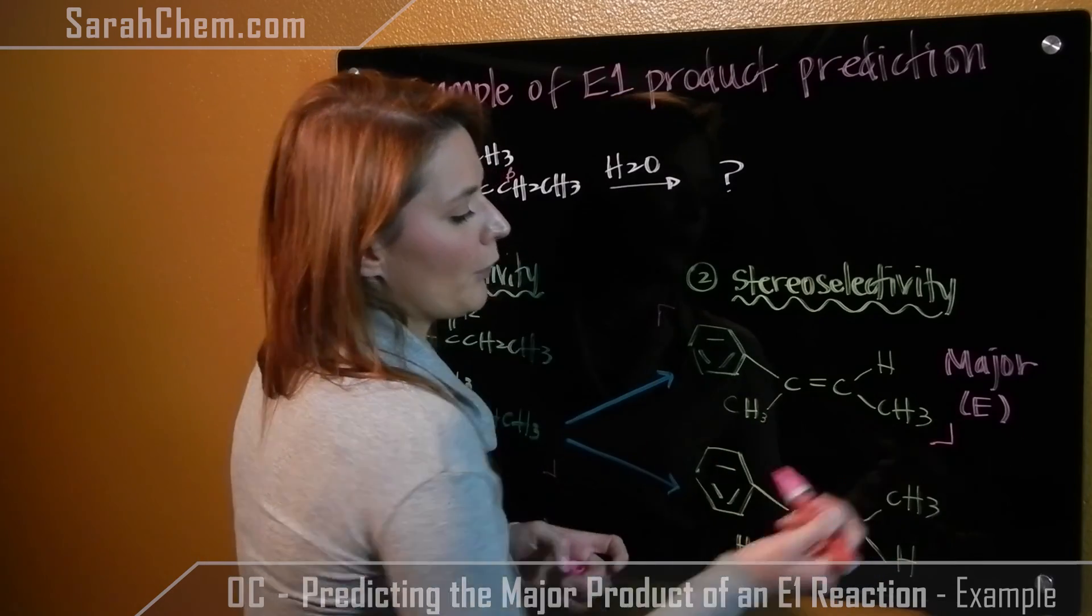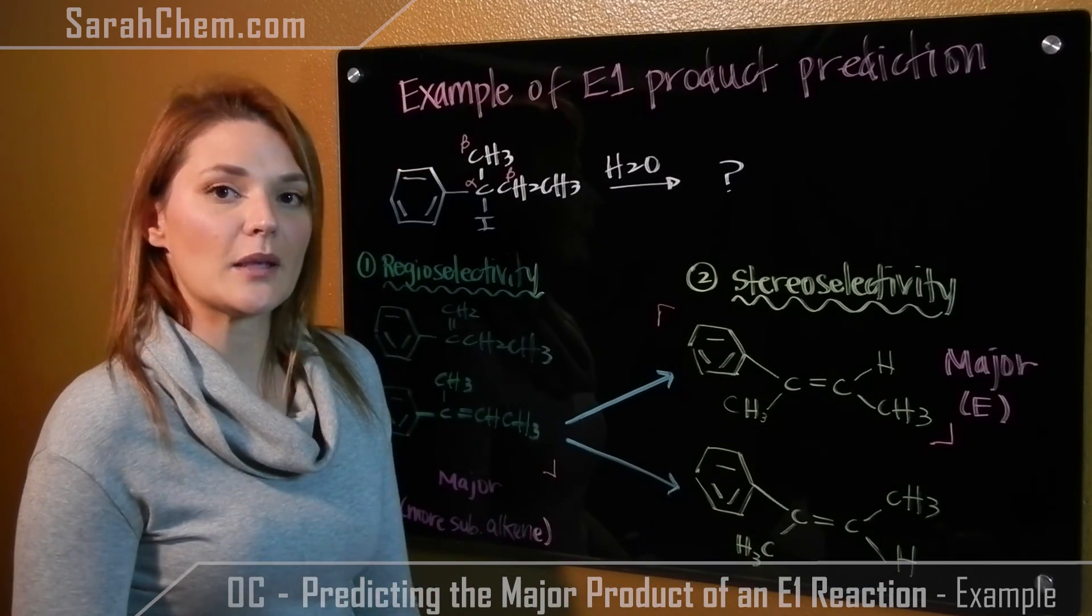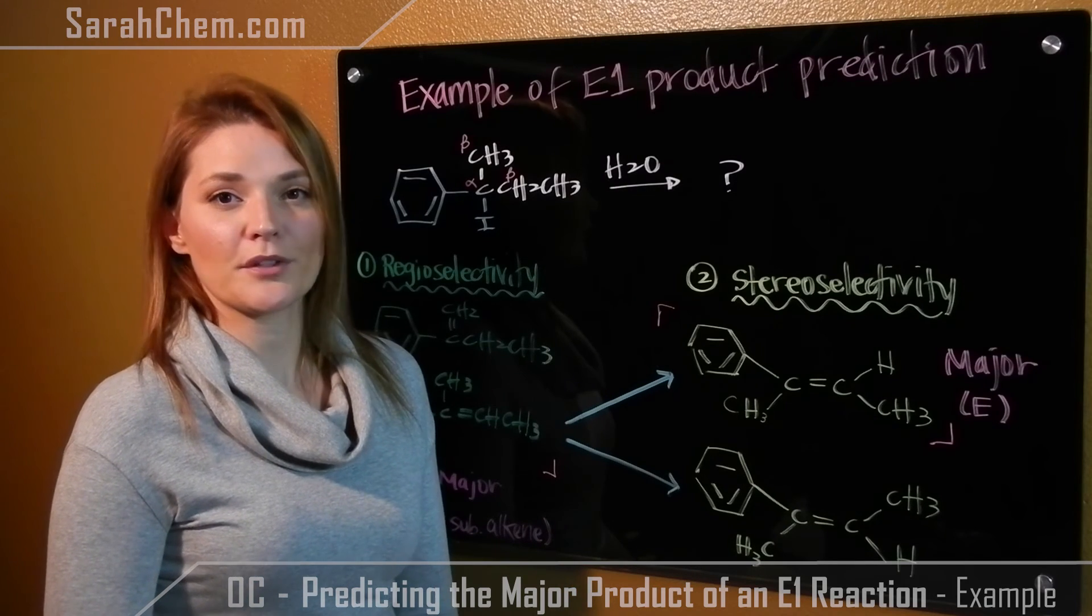So this here would be the overall major product that we would see for an E1 reaction. And that's an example of how you predict the product.